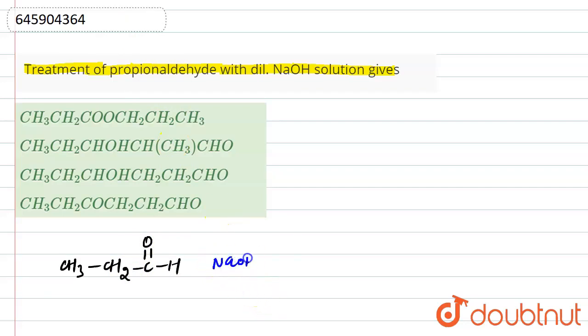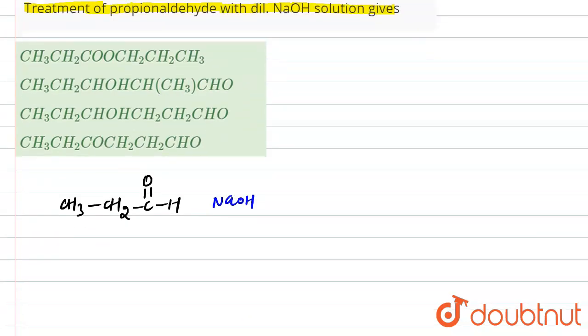When this is reacting with the base NaOH, what product forms? That we have to discuss here. In the presence of base, first of all this alpha hydrogen will be removed from here and it will convert into CH3-CH negative and after that CHO. Now this will act as a nucleophile and will attack on another mole of this propionaldehyde.